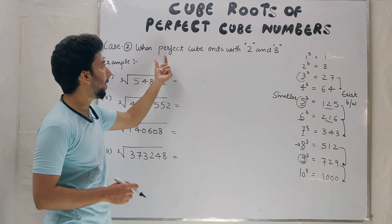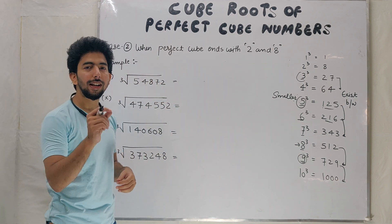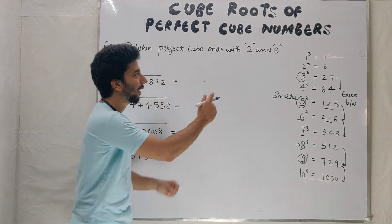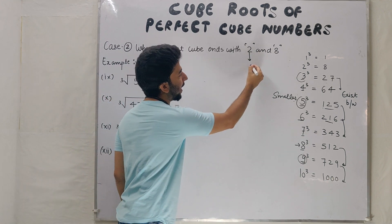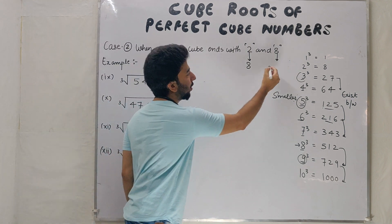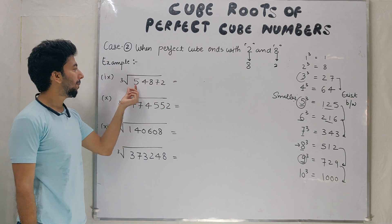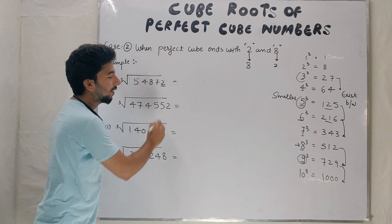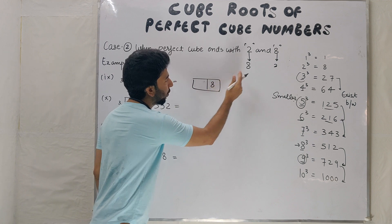Now case number 2: when perfect cube ends with 2 and 8. When perfect cube ends with 2 and 8, then unit place 2 and 8 reverse. If cube number ends with 2, then cube root ends with 8. And if cube number ends with 8, then cube root ends with 2.